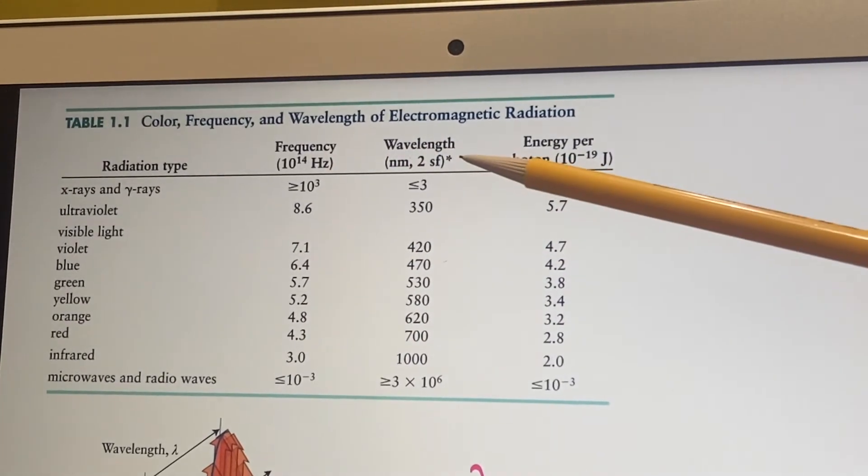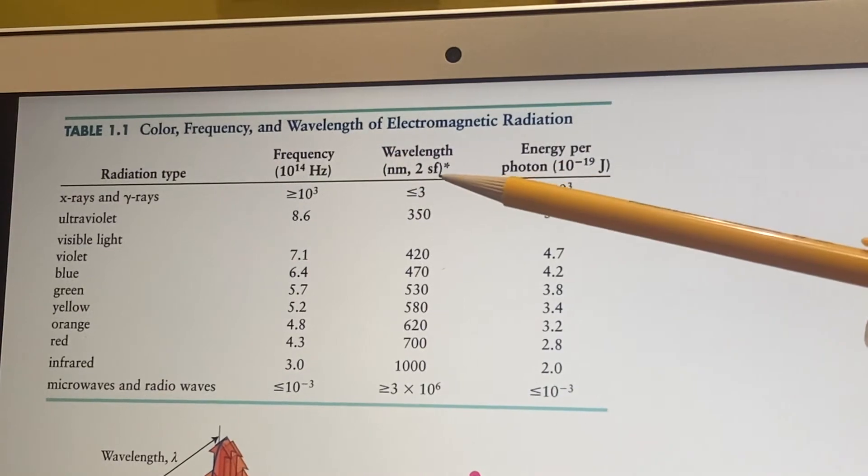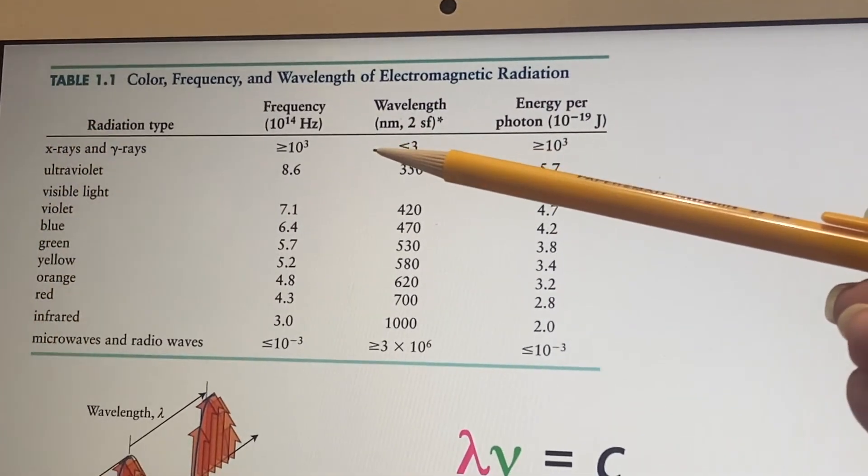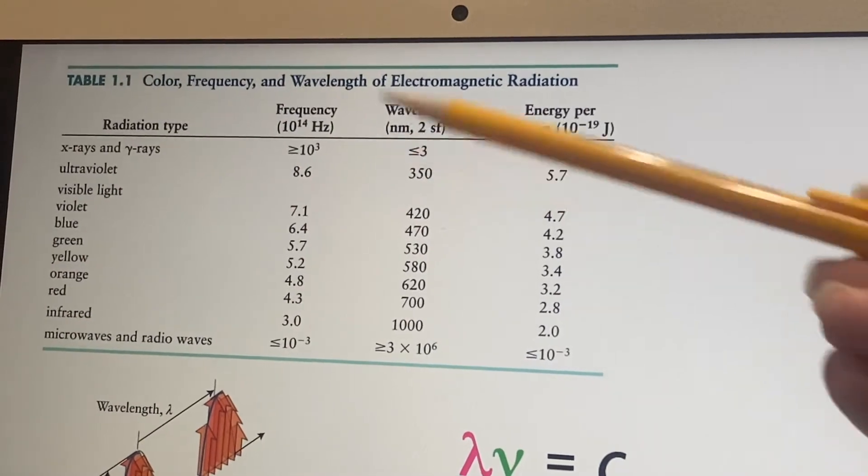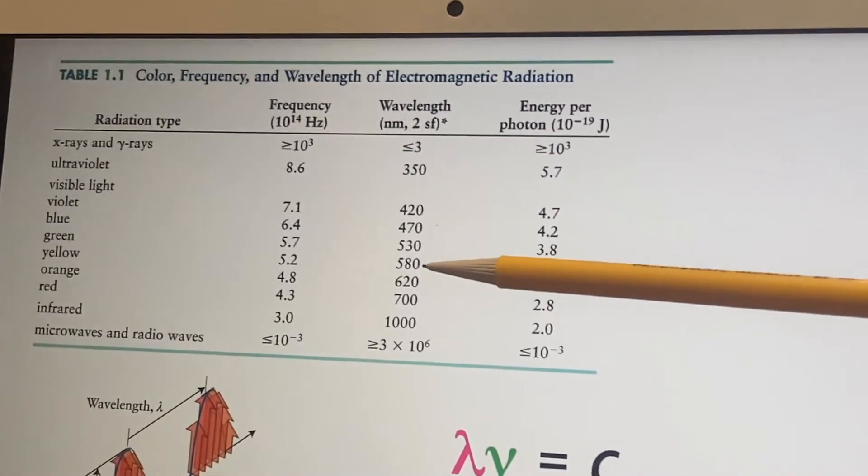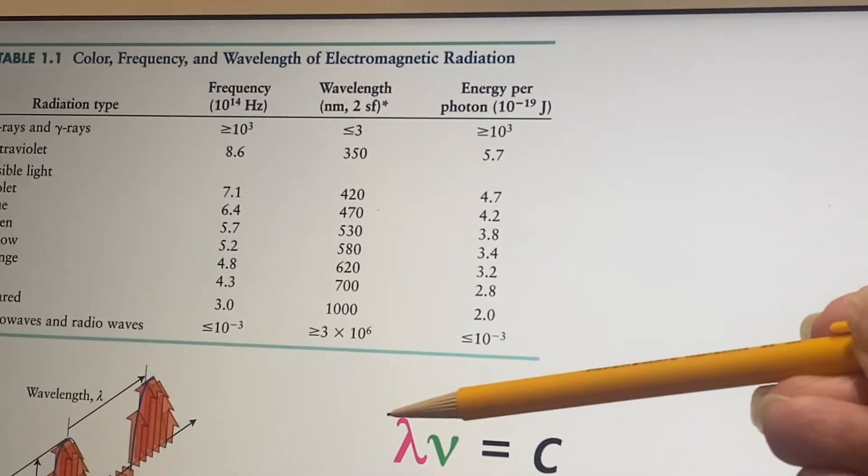Frequency and wavelength. We already had discussed by drawing a picture how if you made the wavelength smaller, you were going to increase the frequency because they're all traveling at the same speed, the speed of light. We have a formula for that.